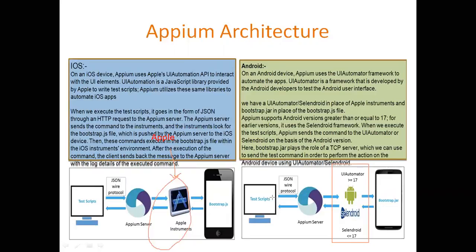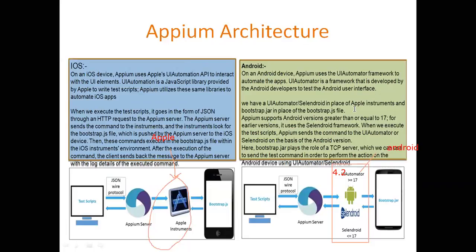If the mobile version you are requesting for execution is above 4.2, it will use the inbuilt UI automator tool, which is developed by Android itself. If the mobile version is less than 4.2, it uses another third-party tool called Selendroid. That way, APM is capable of automating any Android device with any version.